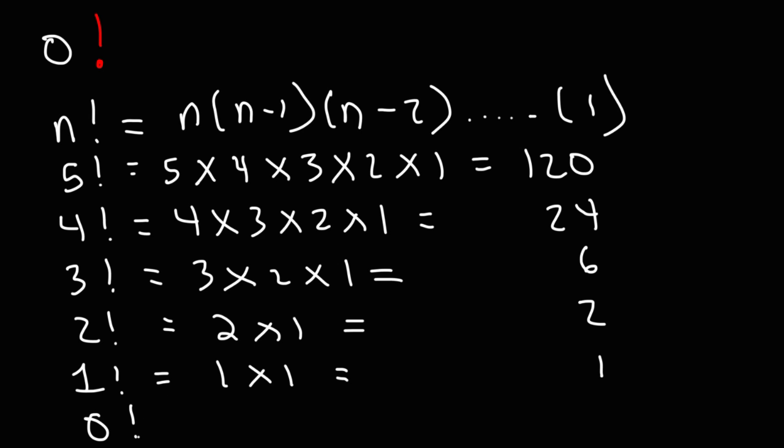Now what about 0 factorial? Well, notice the pattern. To go from 120 to 24, we simply divide by 5. 120 divided by 5 is 24.